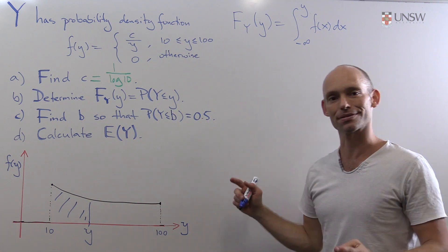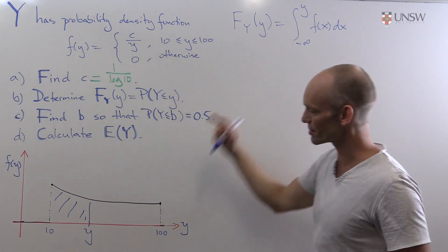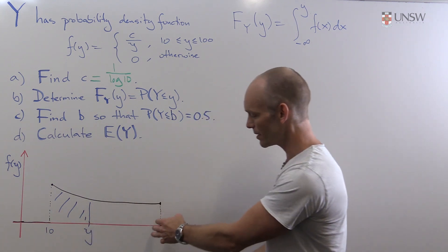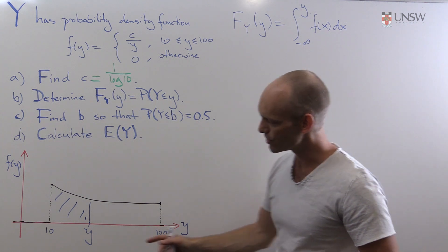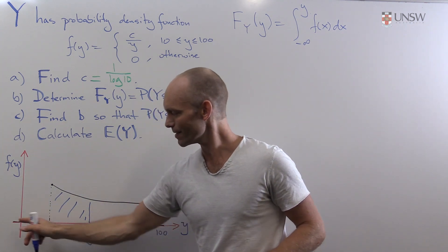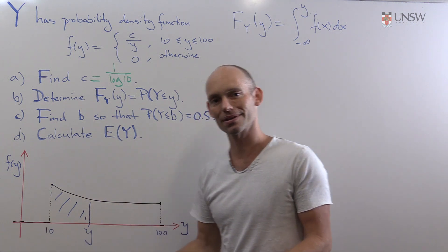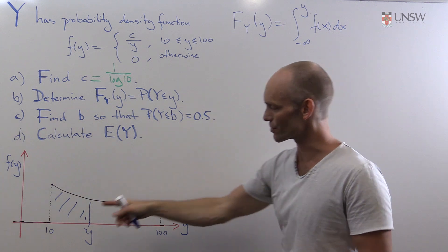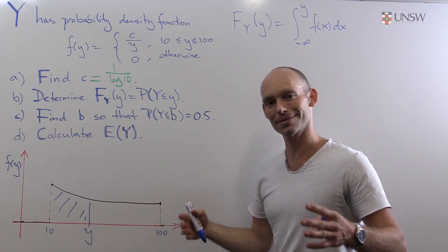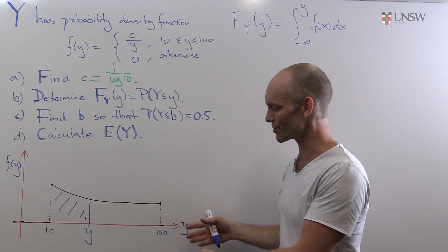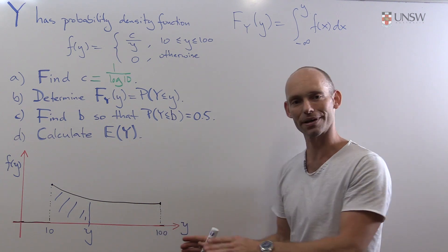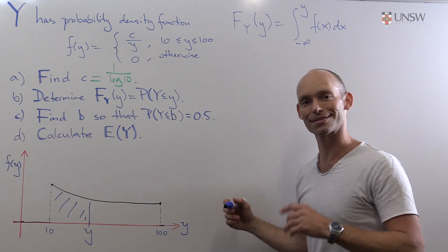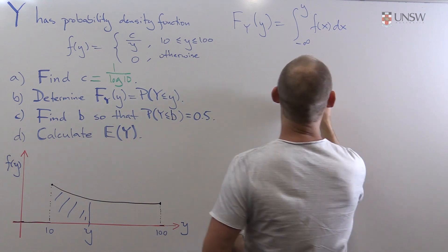But we do have to consider three cases. One where y is less than 10, another where y is within this interval here, and where y is bigger than 100. Because before 10, the density function is 0, so we're just taking an integral over 0. Here, this function will start to grow until we've got all of the probability added up to 1. And then after this, nothing will be added, so it will just flatten out and become 1. So we have to consider three cases here, two of them trivial.